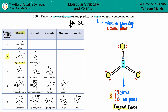The bond angles for trigonal planar are 120° all around. Think of it like cutting a pizza — a circle of 360 degrees — into three equal parts. Each slice is 120 degrees away from the others, because 360 divided by three is 120.